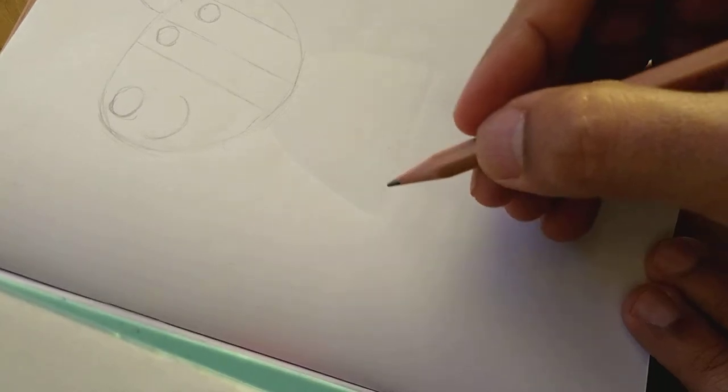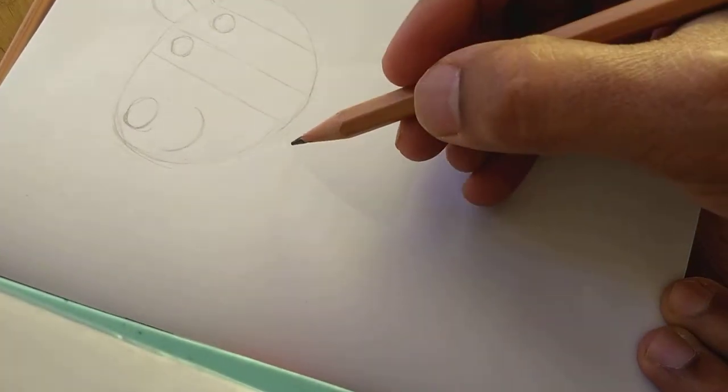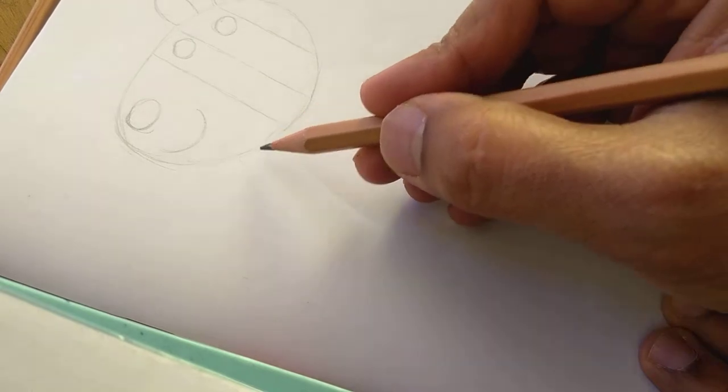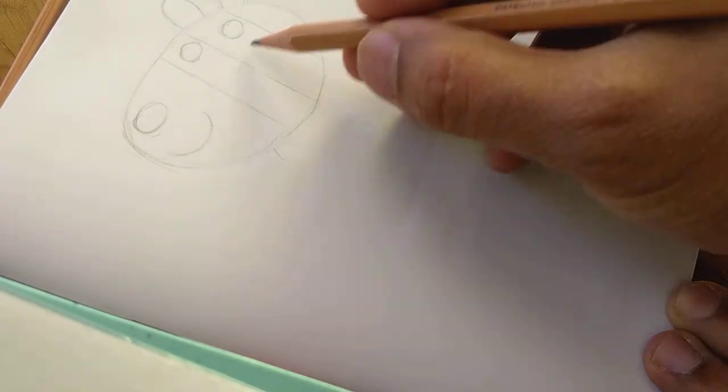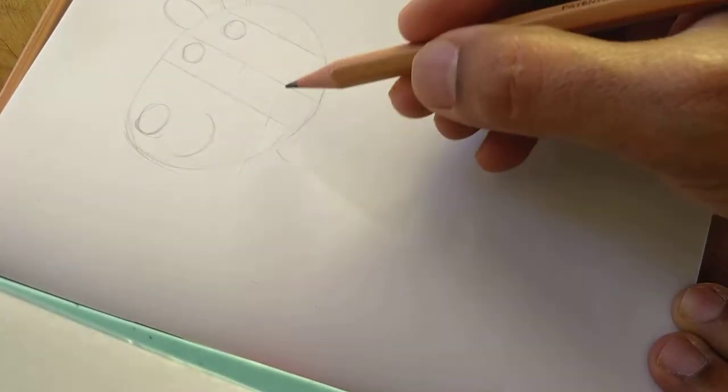This is the face, the rough sketch of the Zoe Zebra face. If you assume this is half and this is quarter.